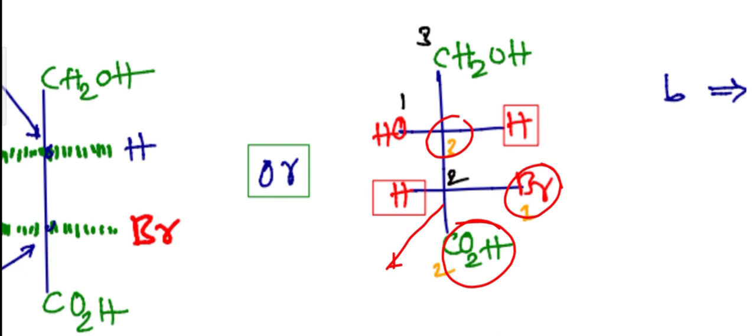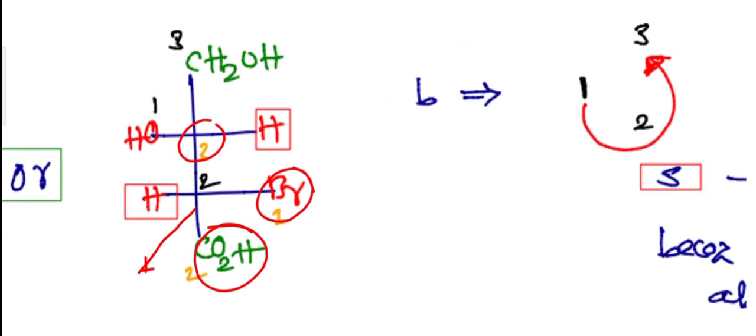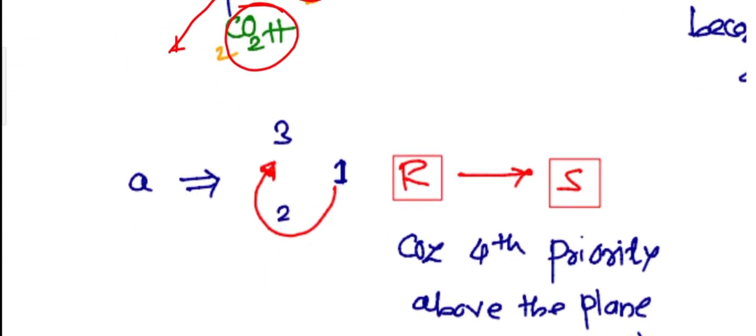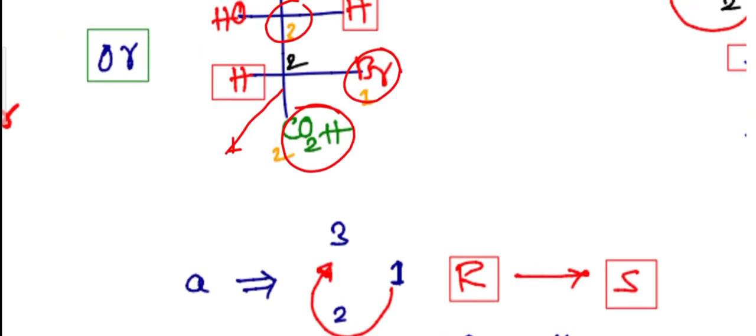There is a fourth priority which is on the horizontal line, that means it is above the plane. So always we have to apply the reverse rule. The chiral center will be like this: one, two, and three. Starting from one, two, and three.